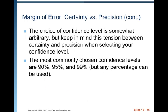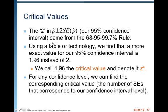The choice of confidence level is somewhat arbitrary, but keep in mind this tension between certainty and precision. The most commonly chosen confidence levels are 90%, 95%, and 99%, but any percentage can be used. Our 95% confidence interval used 2 as the multiplier from the 68-95-99.7 empirical rule — a good rough estimate. Using a table or technology, a more exact value is 1.96, which we call the critical value, denoted z*. That is the multiplier for every 95% confidence interval.